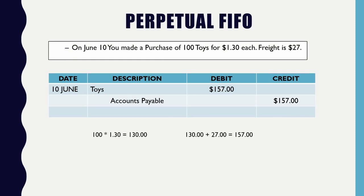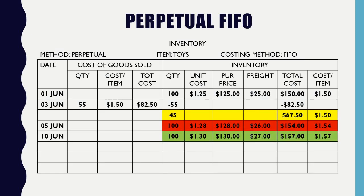On June 10th, we made an additional purchase of 100 toys at $1.30 with freight costing $27. Just as before, we work into our middle section and recognize a third batch, which I've colored green — just so you can see the difference between them. Now I have three batches: yellow for 45 items, red for 100 items, and a third green batch for 100 items.